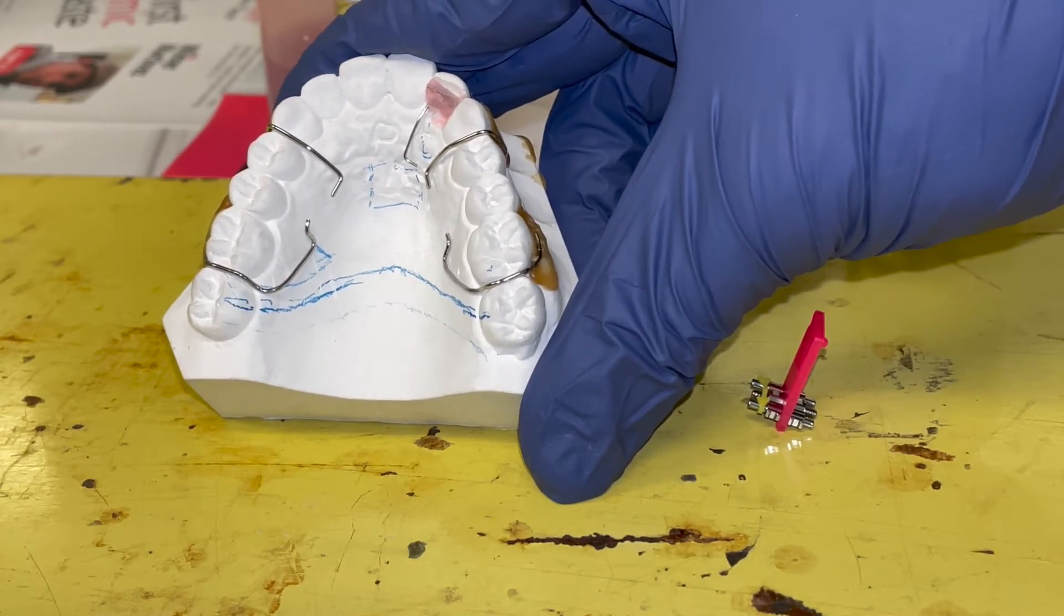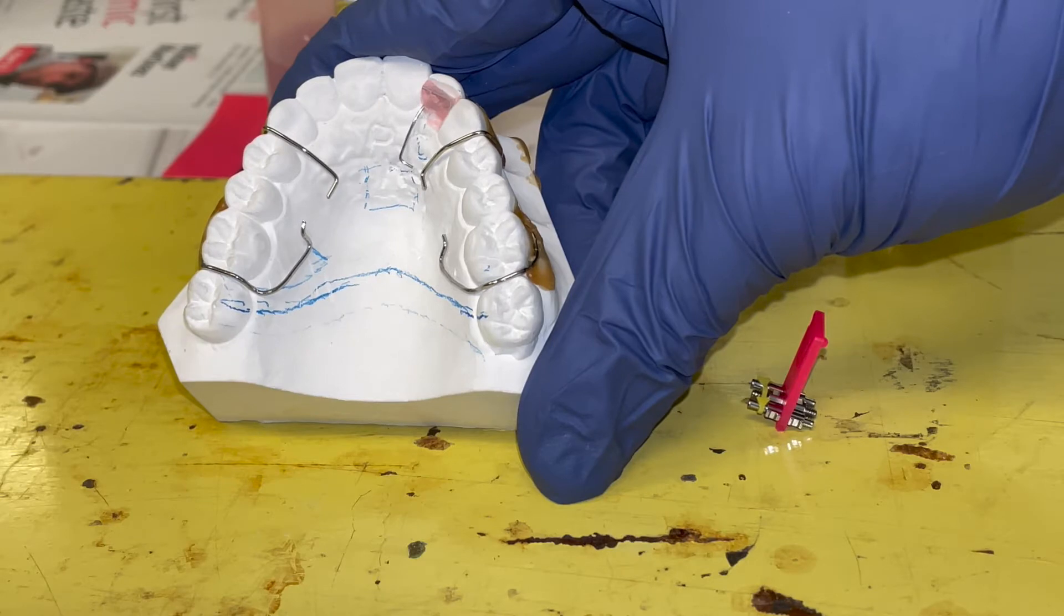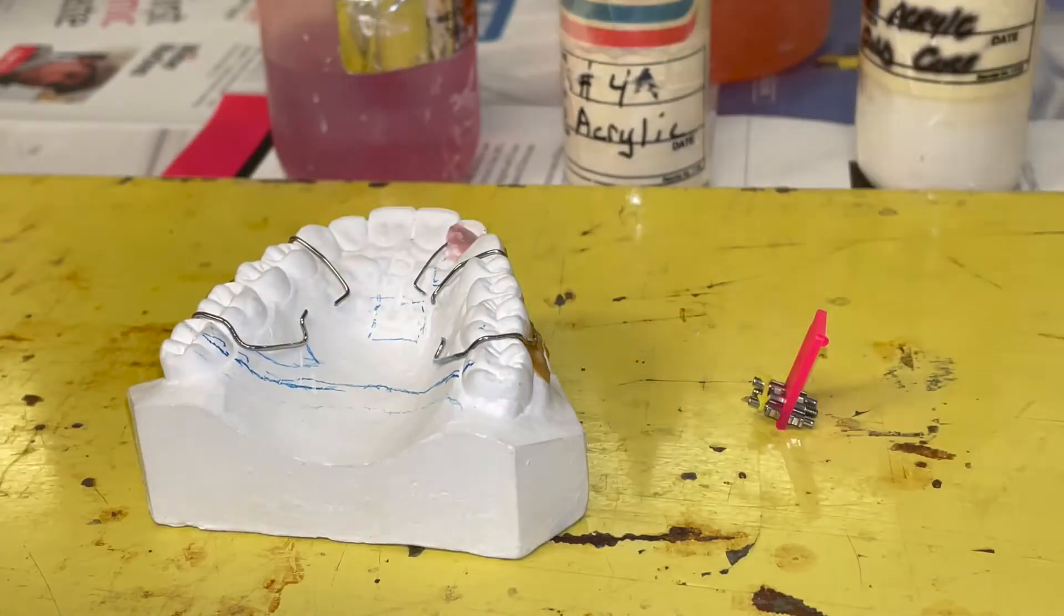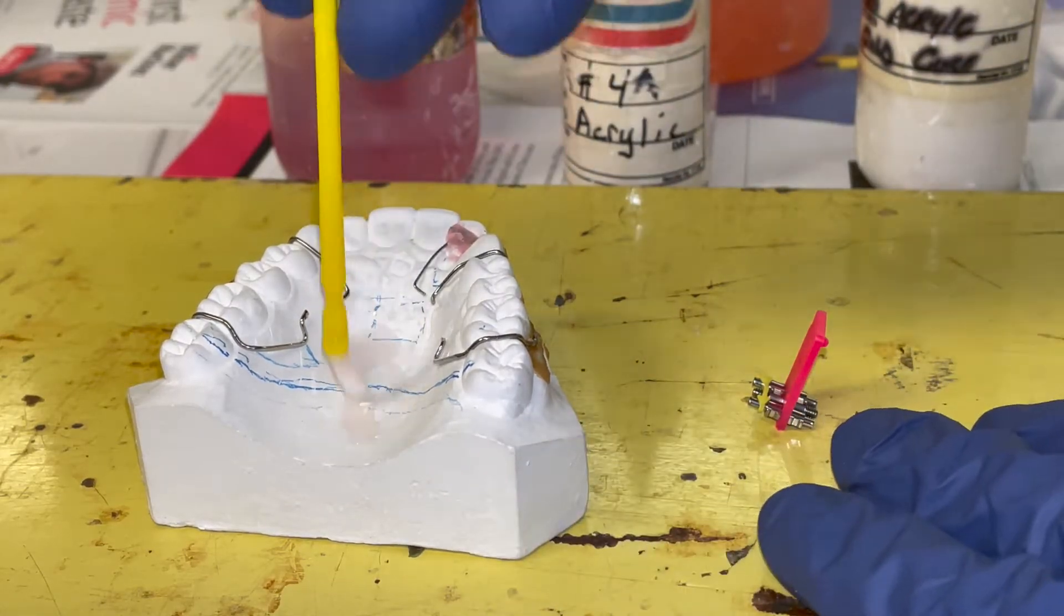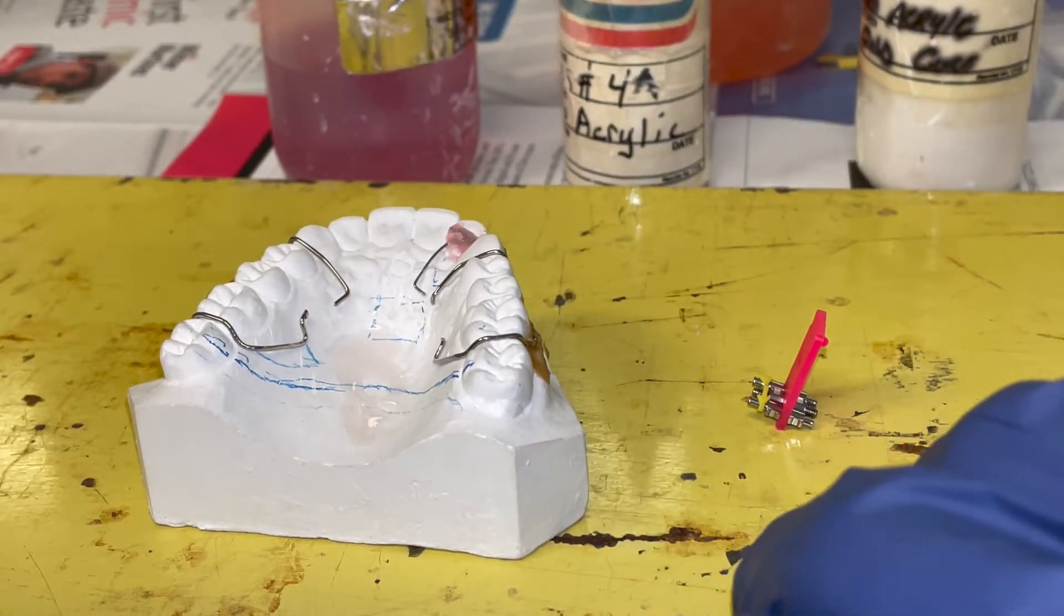One of the most important steps is to add tinfoil substitute. That has to be added all over the occlusal surface, the palate, and incisal edges. This will prevent the acrylic from sticking to the model.